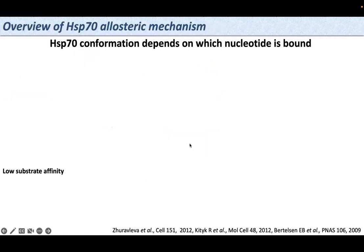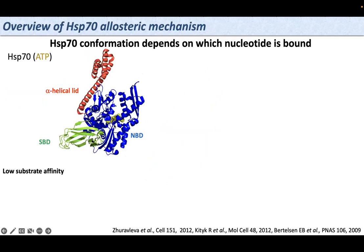Now we can go through the HSP-70 allosteric mechanism. HSP-70 conformation depends on which nucleotide is bound. When HSP-70 is bound to ATP, the substrate binding domain is docked into the NBD and the alpha-helical lid is open. Also, subdomains 1B and 2B are collapsed onto one another. We call this NBD conformation the closed conformation.